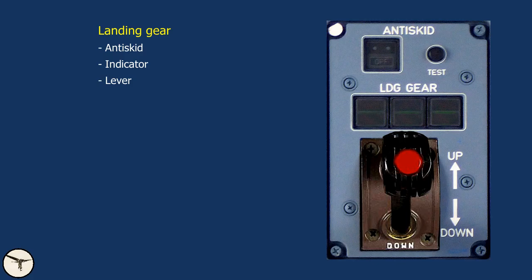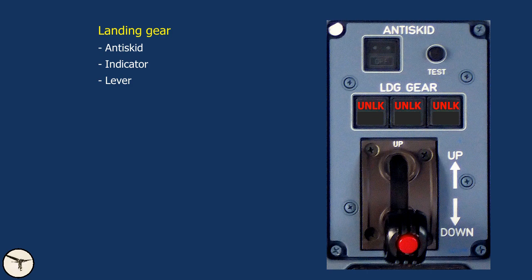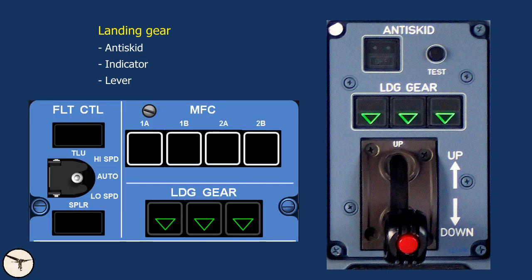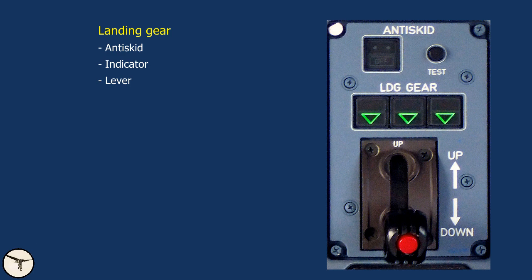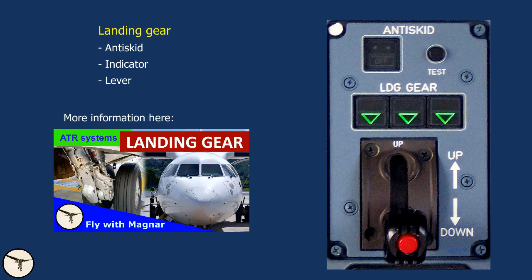Below we have the landing gear panel. There is a push button for anti-skid and a test button. This is the primary landing gear indicator: when the panel is dark, the landing gear is up and locked; red unlock lights indicate it is in transit; and green triangles indicate the gear is down and locked. There is a second indicator in the overhead panel, totally independent of the primary. When at least one indicator shows three green, the gear is considered down and locked. The gear lever is shaped like a wheel and must be pulled out before it can be moved up or down. It is not possible to retract the landing gear on the ground.